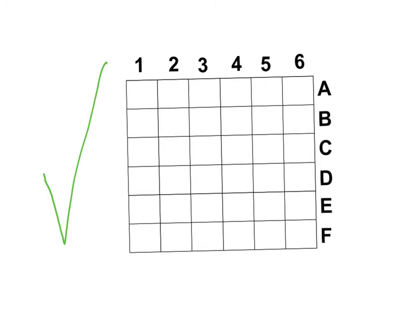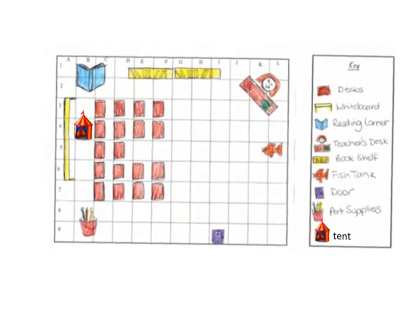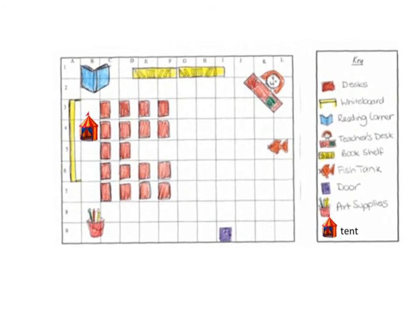Here you can see I've made a pretend grid map of my classroom. I've got my grid over here and I know it's a good grid because they've all got even square spaces. I've labeled my x-axis, you can see the numbers along A to L, and my y-axis as well is going one to nine. So I can give myself a tick. I've got even spacing, a labeled x-axis, and a labeled y-axis.